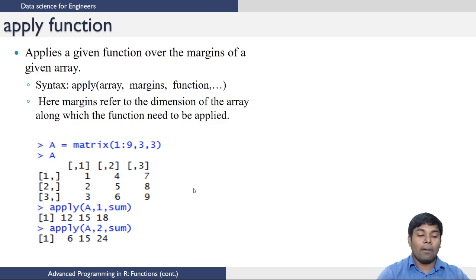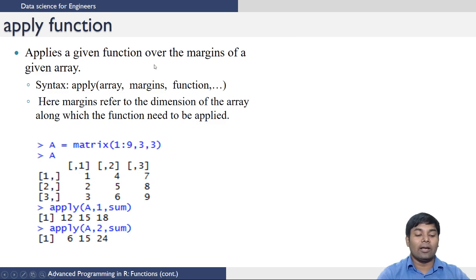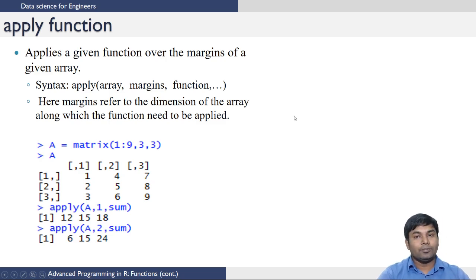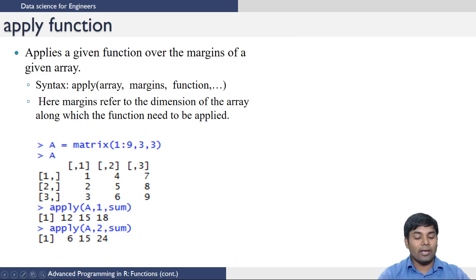Here is an example for the apply function. It applies a given function over the margins of a given array. The margin refers to the dimension of the array along which the function needs to be applied. Let us create a matrix A with elements 1 to 9 in a 3 by 3 size. When you print A you can see the matrix. Now I want to evaluate the sums across the rows and across the columns.